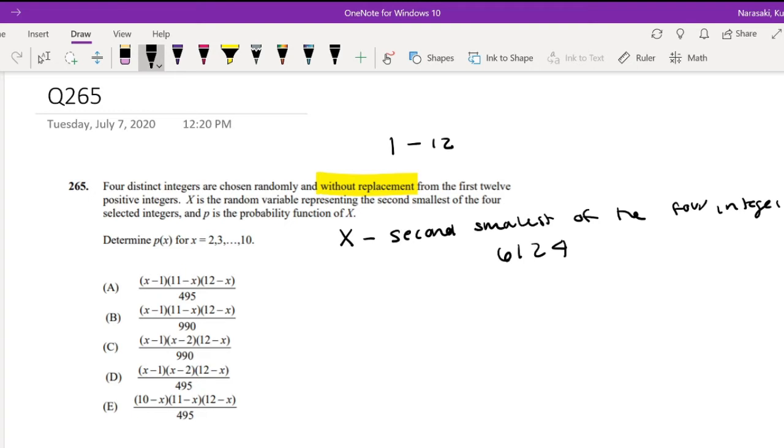And that's one of the reasons why the probability function starts at 2, because 1 can never be the X because 1 is always going to be the smallest, not the second smallest. Since it's also without replacement, no two cards can be drawn twice.